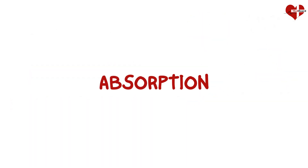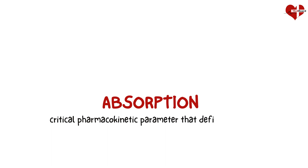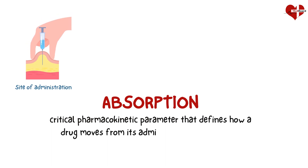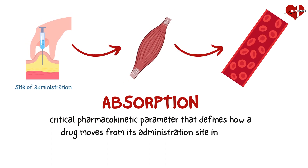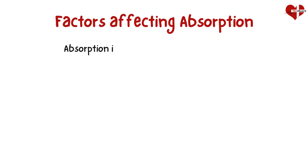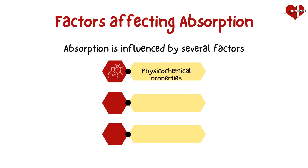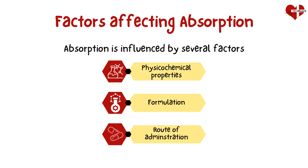Drug absorption is a critical pharmacokinetic parameter that defines how a drug moves from its administration site into the bloodstream. This process is influenced by various factors, including the drug's physicochemical properties, formulation, and route of administration.